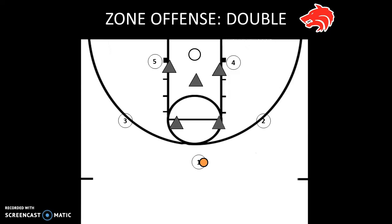The play we're going to be looking at is a set play against a zone defense, in this case a 2-3 zone. It's called Double. Double sets up in a typical zone offense set: the point, the one at the top of the key, two and three on the wings, and four and five are at the blocks.